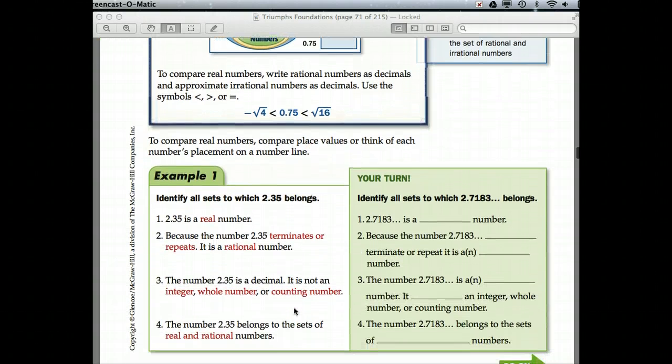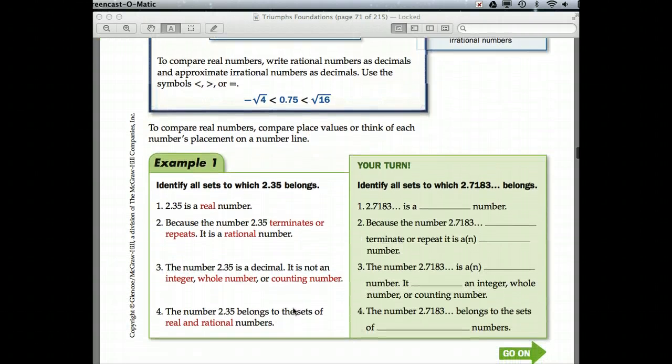Let's look at an example. All right. Identify all sets to which 2 and 35 hundredths belong. Well, it's a real number because we're discussing real numbers. Because the number 2 and 35 hundredths terminates or repeats, it is rational. It's written as a decimal, so it's not an integer, whole number, or counting number. And so, finally, you could say that it belongs to the real and rational because it does not belong to those others.